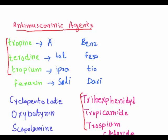The drugs include: benztropine, atropine, tolterodine, fesoterodine, trospium, ipratropium, tiotropium, solifenacin, darifenacin, trihexyphenidyl, tropicamide, and trospium chloride.